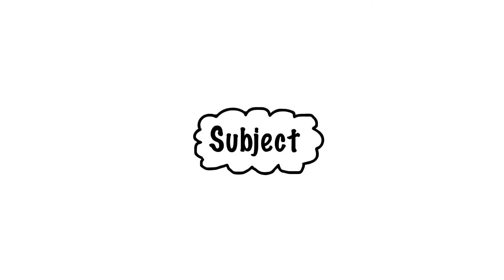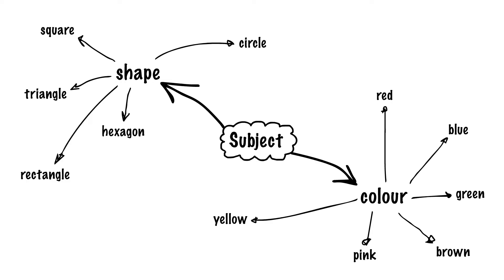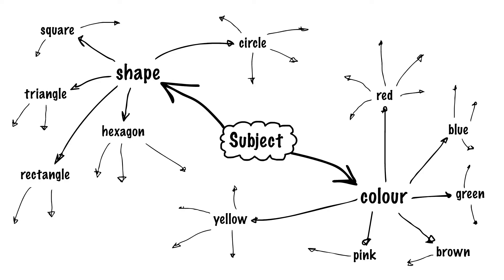Then, for each category, draw lines extending out of the central node in any direction, with the name of the category at the end. Now, for each of the categories, think of any words that relate to it and draw them in the same fashion as in the previous step. You can repeat this step for the new set of categories or highlight words if need be.